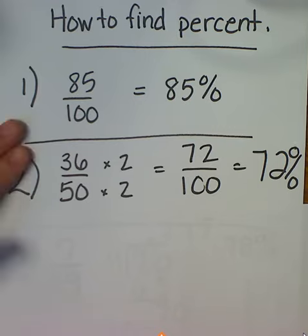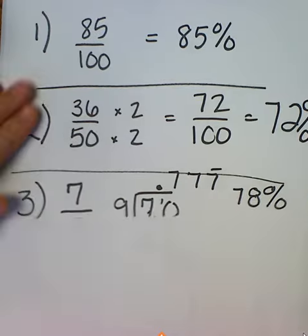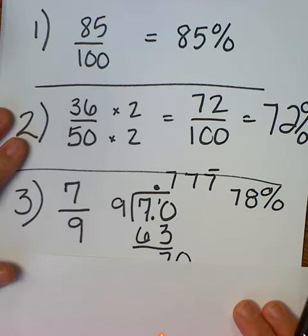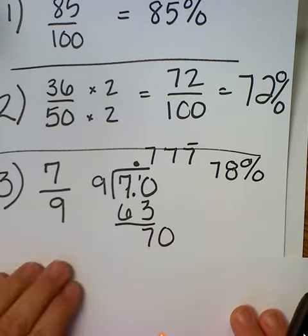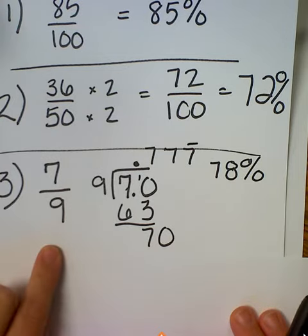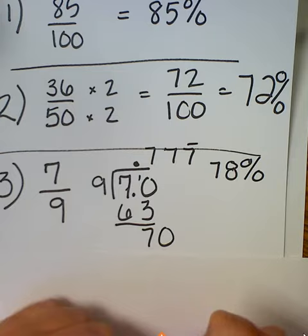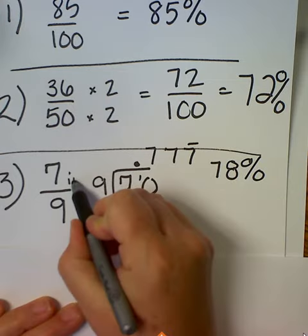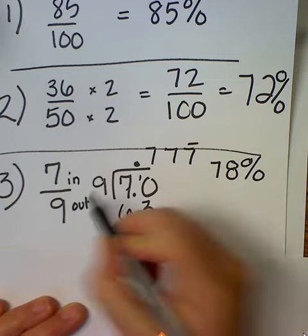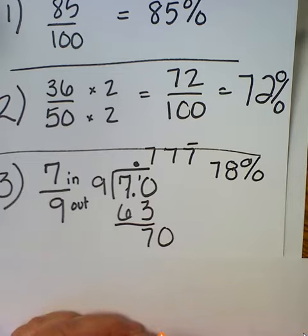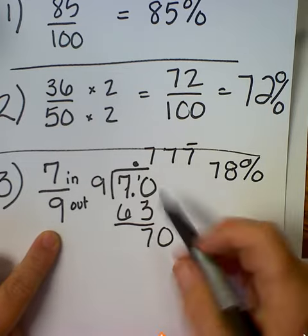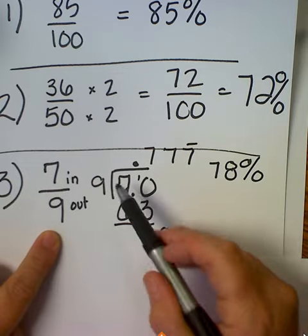The third way you can find a percent. Let's say you had a quiz and it was only 9 problems, and you got 7 correct out of 9. Then we do what I call in and out, which is just dividing the top number by the bottom number. So, 7 goes in the house, 9 goes out of the house, place our decimal.